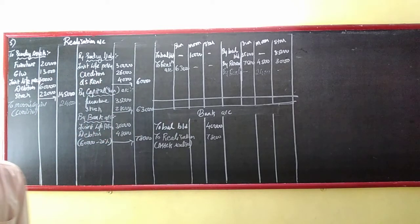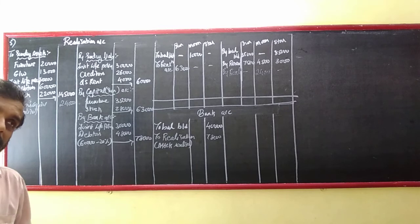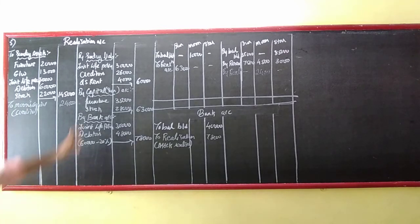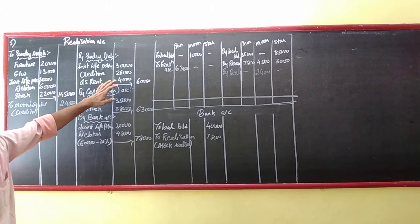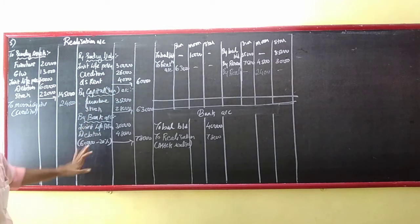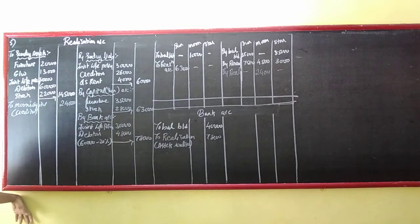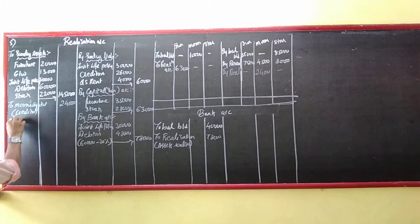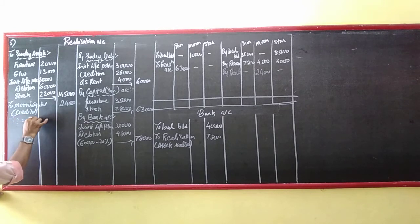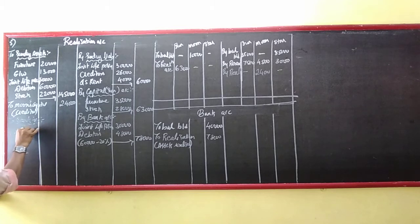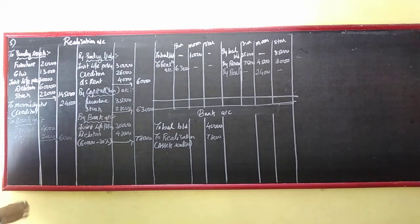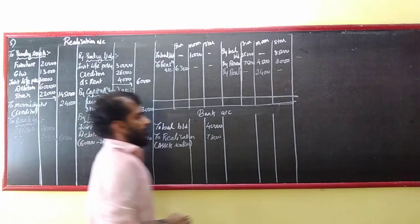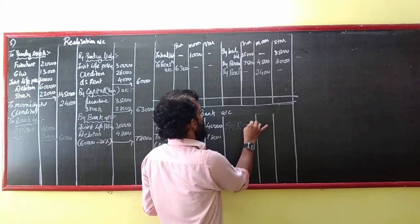Last adjustment, number 4: Realization expenses amounted to 2,000. Outstanding rent 4,000 and expenses 2,000, that means total I am paying 6,000. Realization account debit, to bank. My analysis: by realization expenses.